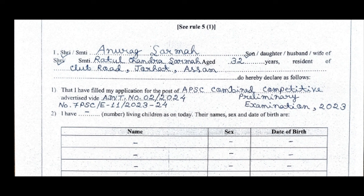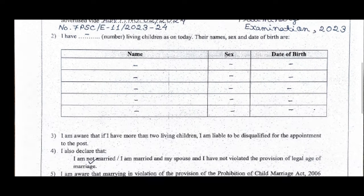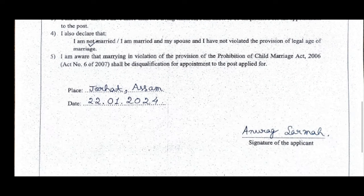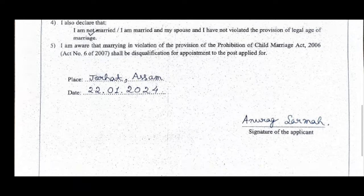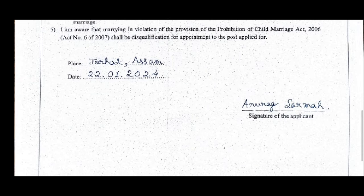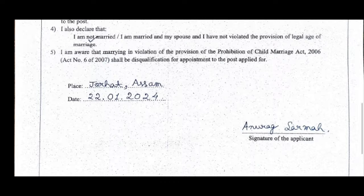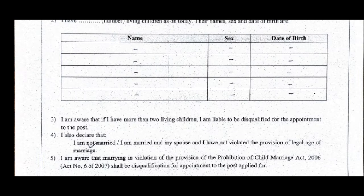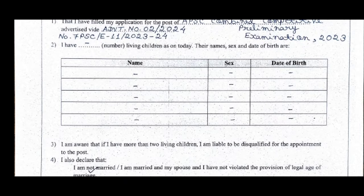On the screen you can see how many children, and also whether the applicant is married or unmarried. You can see a place for the signature of the applicant, and the number of backgrounds required.